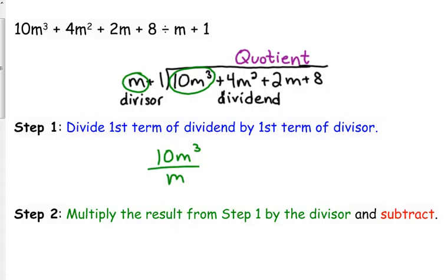Divide the first term of the dividend by the first term of the divisor. So, 10m cubed divided by m. Well, 10 divided by 1 is 10, and m cubed divided by m is m squared. Remember, when you divide with exponents, you subtract.